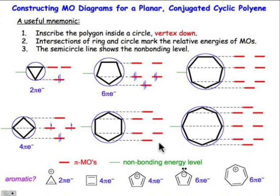We know benzene is. It matches the four n plus two rule, both of these do. Four n plus two, where n is equal to one, and we have aromatic systems in both cases.